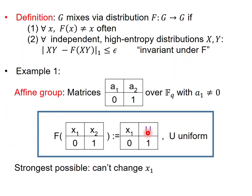Let's see the examples. In the example of the affine group, which again was the group of two by two matrices with entries a1, a2, 0, 1, you can mix as follows: you can define F that given a matrix sets the top right coordinate to a uniform element in the field. So given any element from the group, F just replaces the top right entry with a uniform element from the field, and this actually turns out to be the strongest possible mixing because you cannot change the entry x1.